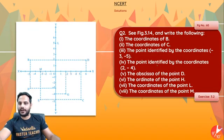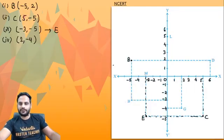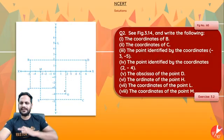Then the point identified by the coordinates (2, −4). We want the point at x-coordinate 2 and y-coordinate minus 4. Looking at x-coordinate 2 and y-coordinate minus 4, that point is G. Simple as that — very simple exercise, very simple questions.